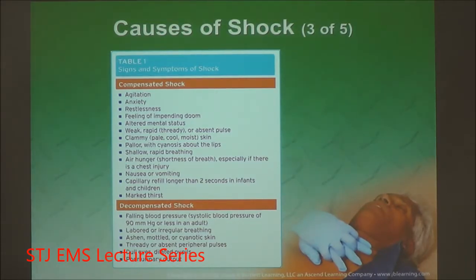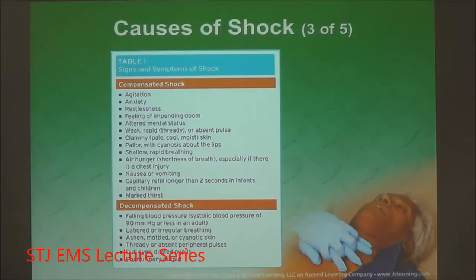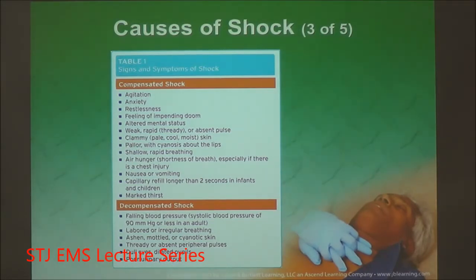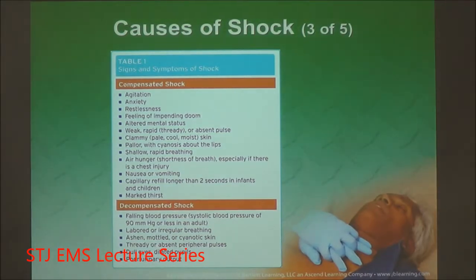Compensated shock is the body flipping into sympathetic tone. It recognizes a problem — whether absolute hypovolemia like hemorrhagic, or relative like vessel dysfunction. The sympathetic response triggers norepinephrine and epinephrine secretion. Alpha stimulation causes arterioles to contract and constrict, increasing systemic vascular resistance and raising diastolic pressure. The beta qualities of epinephrine and norepinephrine stimulate cardiac cells, increasing inotropy and chronotropy, causing tachycardia and raising systolic pressure.